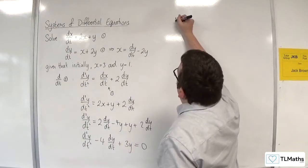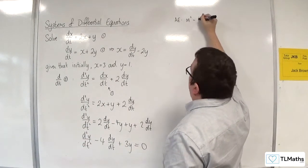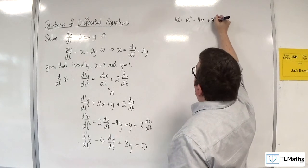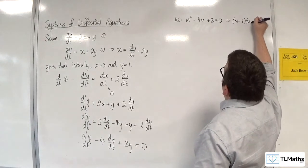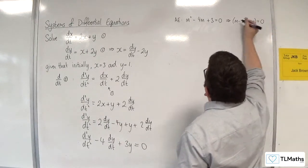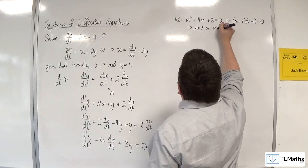So we then go to the auxiliary equation. m squared take away 4m plus 3 is equal to 0. So m take away 3, m take away 1 is 0. So that means that m equals 3 or m equals 1.